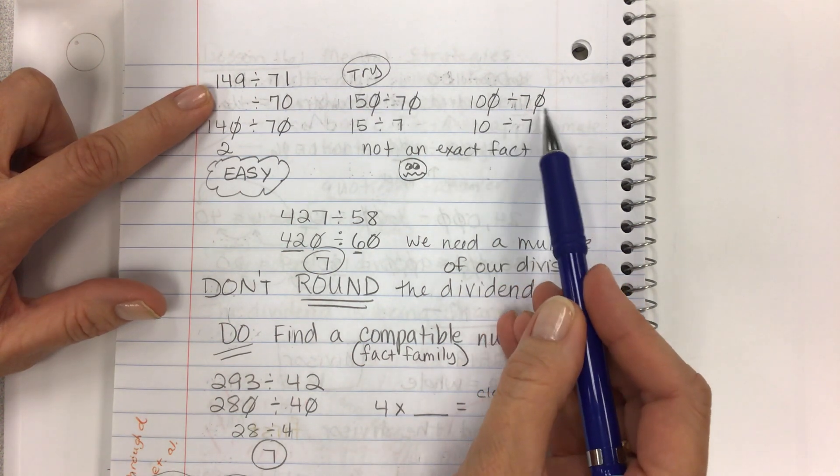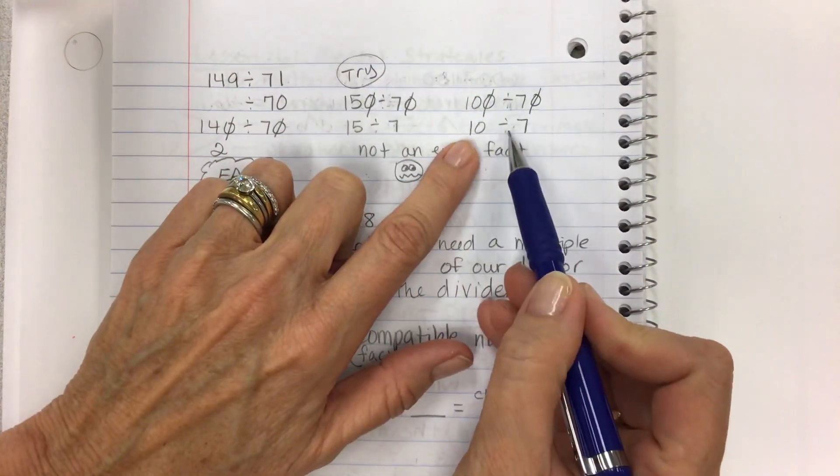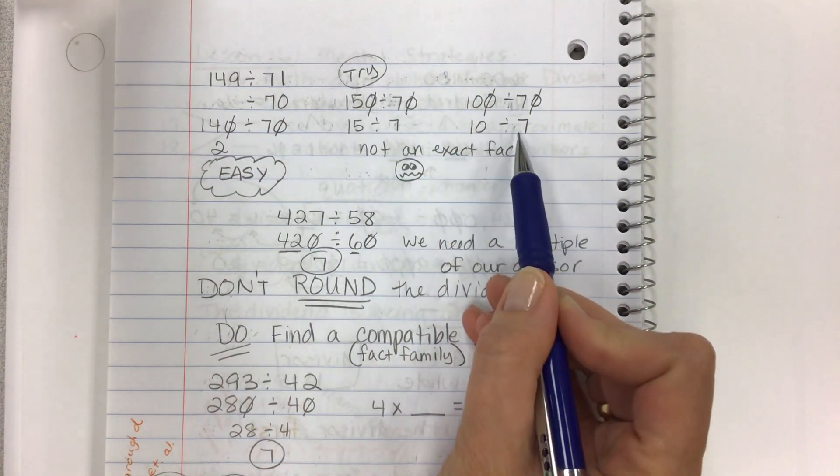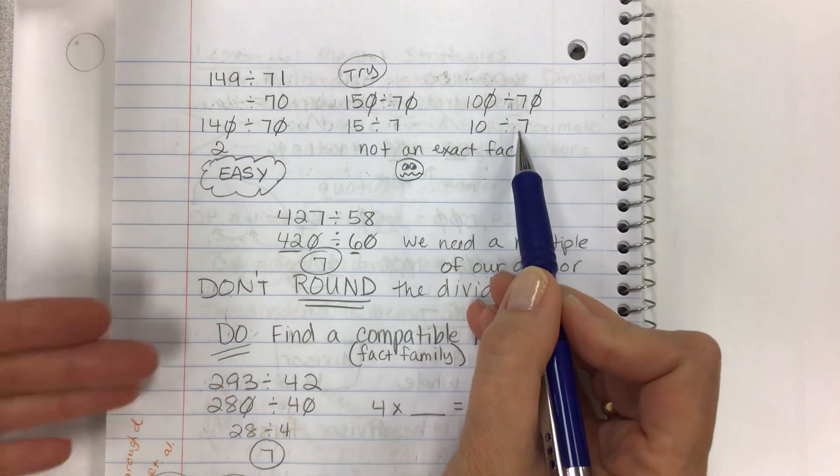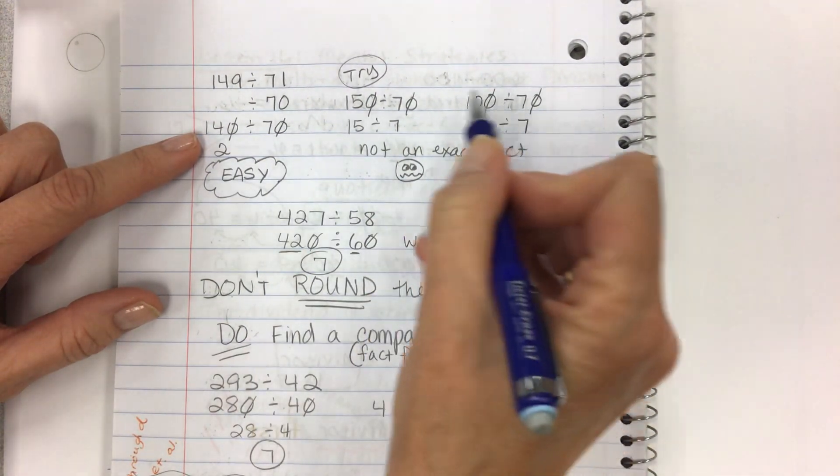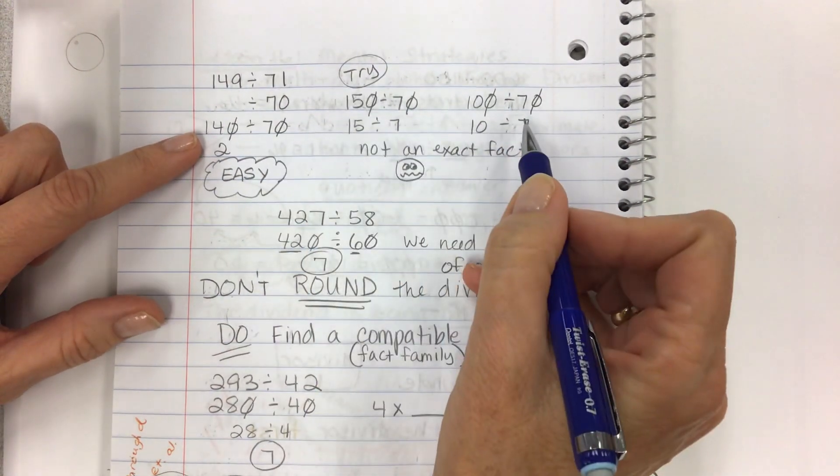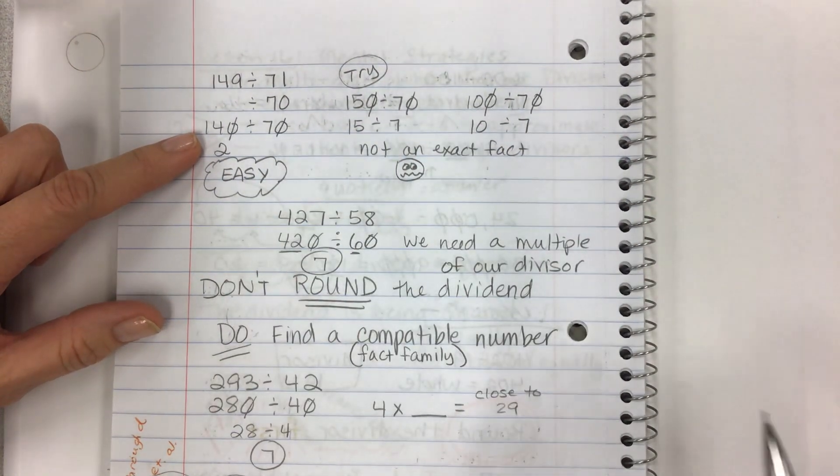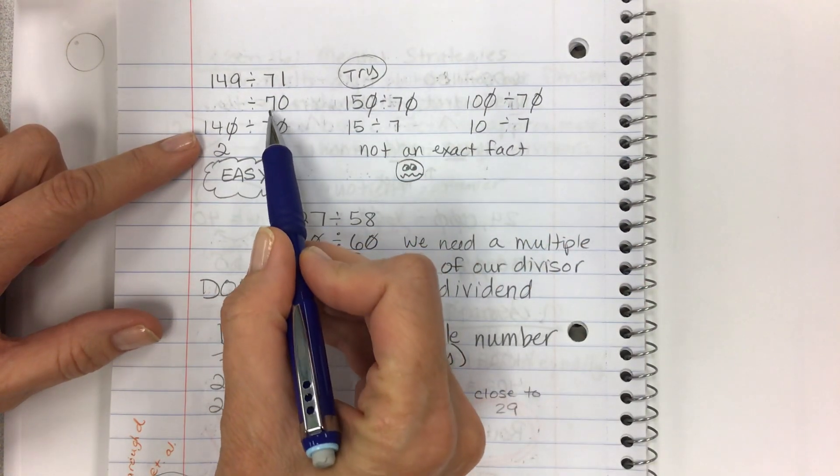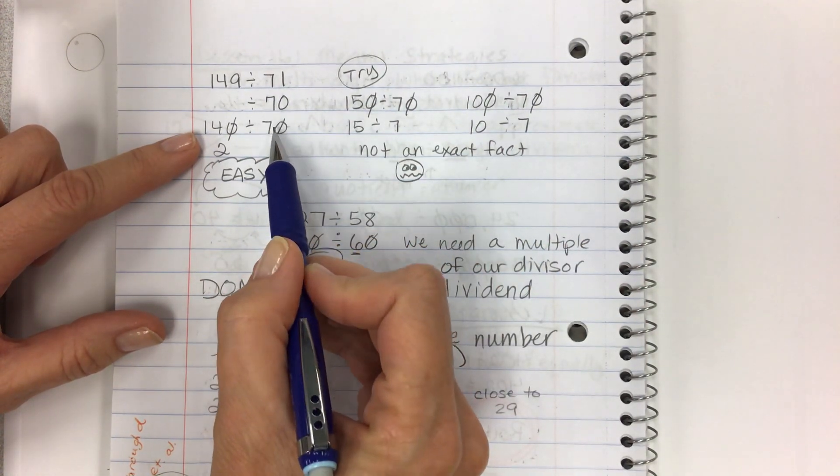What if you rounded 149 and said, well, I'll round to the nearest 100. So you round it to 100. 100 divided by 70. Yuck. Who wants to do that one? Not me. 10 divided by 7 is not an exact fact. You're not going to get that easy multiple, like 14 divided by 7. So you do not want this.